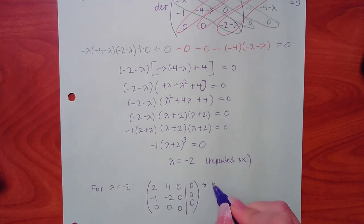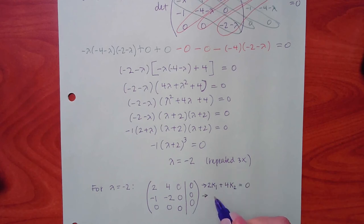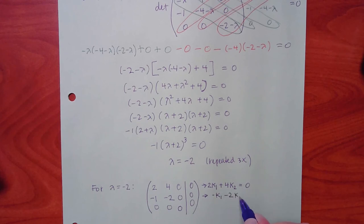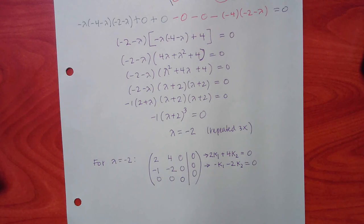The resulting matrix has a zero row at the bottom, so we can go straight to the k-equations. The first row gives: 2 k1 plus 4 k2 equals zero. The second row gives: negative k1 minus 2 k2 equals zero. Notice: k3 doesn't appear anywhere.